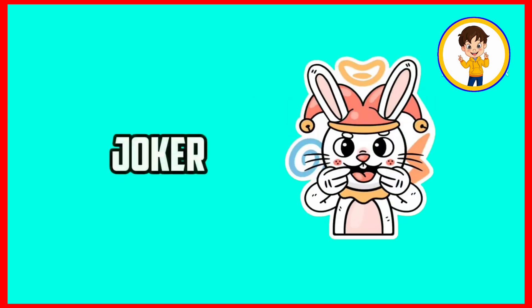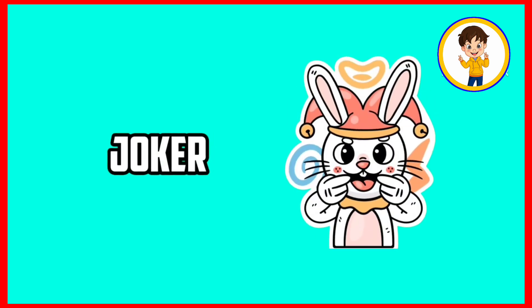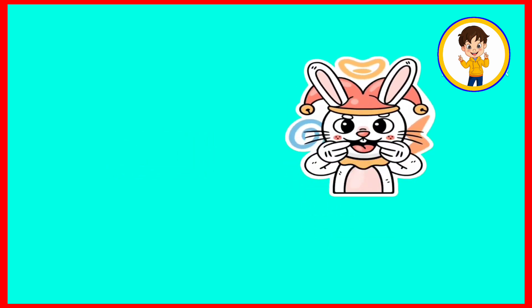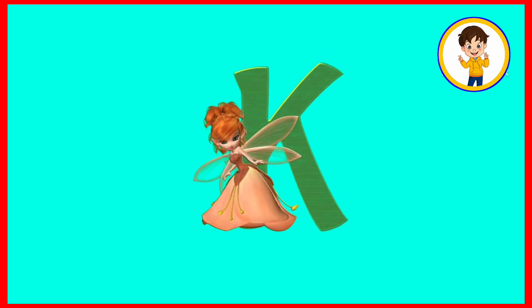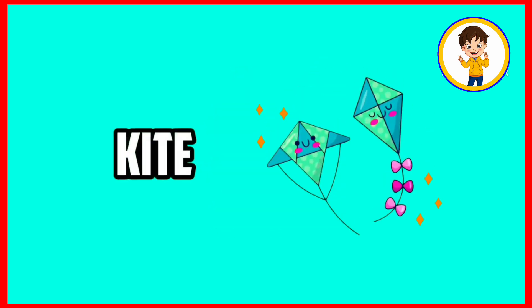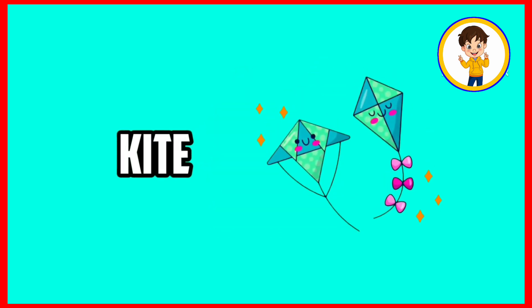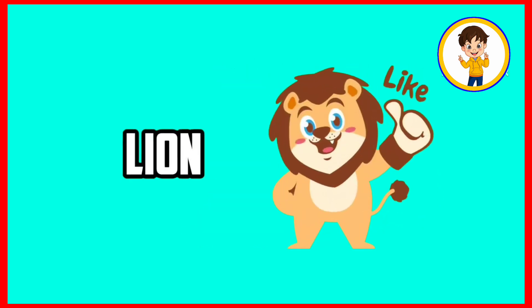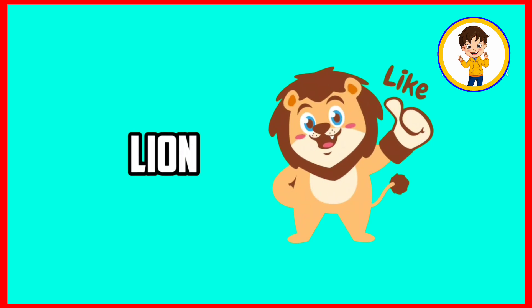J. J is for joker. Joker means joker. K. K is for kite. Kite means petang. L. L is for line. Line means share.